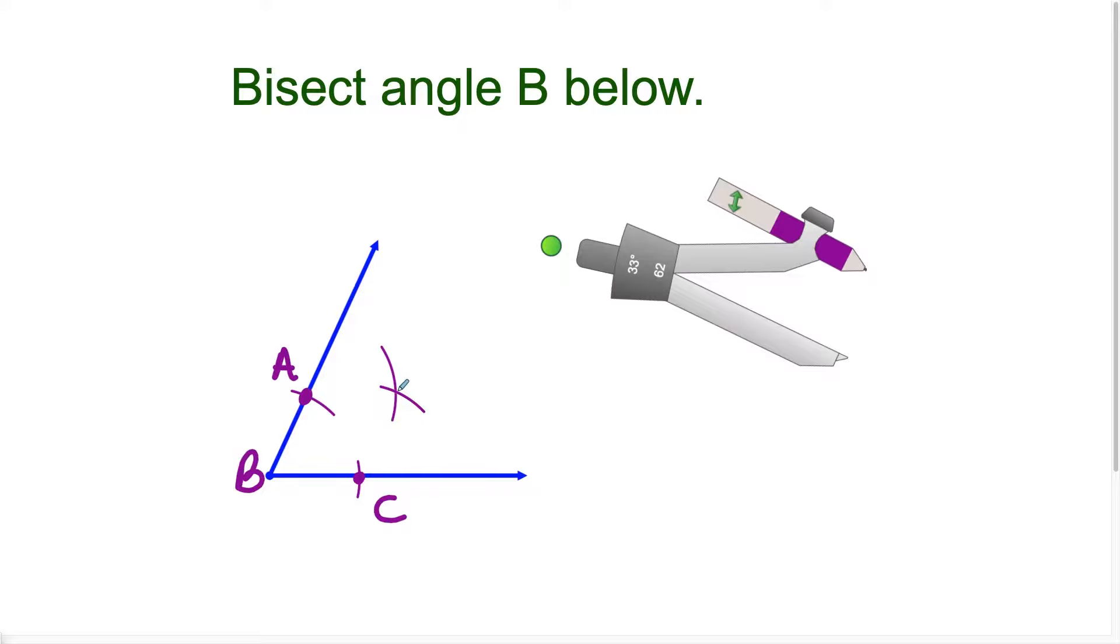Now this point here, all I have to do to complete this construction is connect point B to this intersection point. And there we have it.